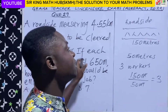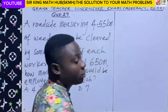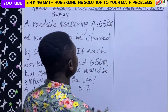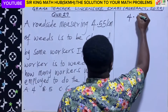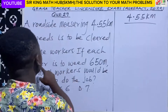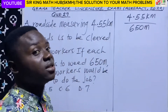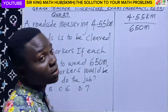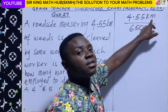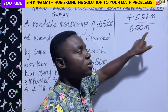We use the same idea to tackle the main question. The length of weeds along the roadside is 4.55 kilometers, and each worker is to weed 650 meters. Dividing these should give us the number of workers. But we must check the units — the length of the roadside is given in kilometers and the amount each worker clears is in meters, so the units are different and we cannot divide directly.